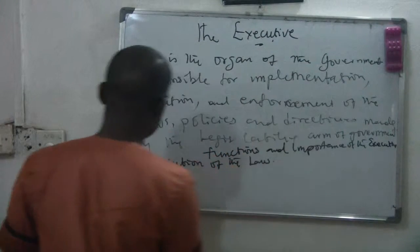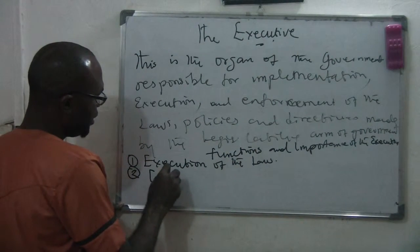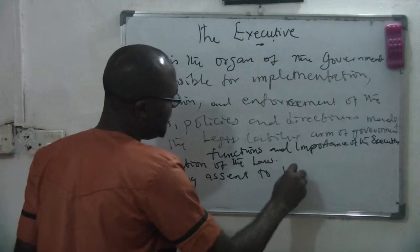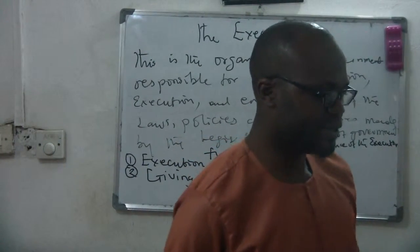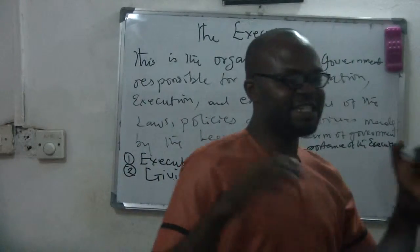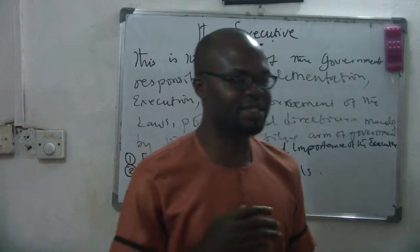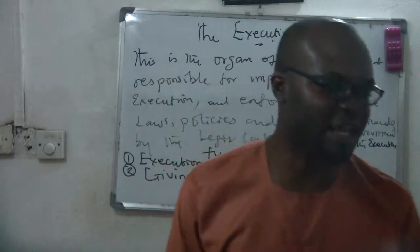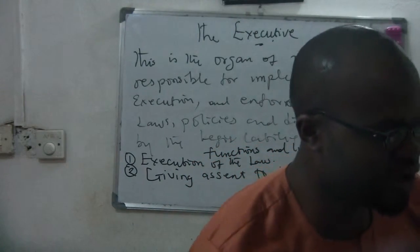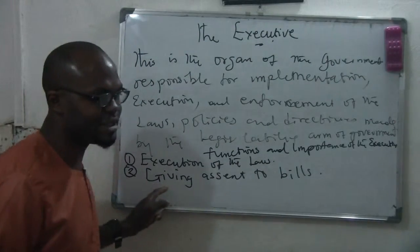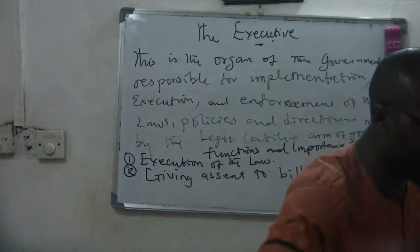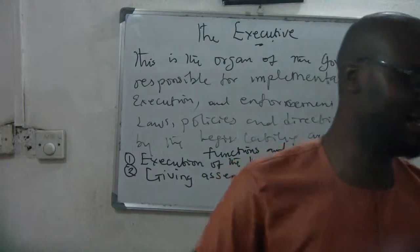Number two function is giving assent to bills. When the legislature in their chambers — like the National Assembly, the Senate or the House of Representatives — passes a bill, that bill has not become a law until the president signs it. Until the president gives assent to the bill by signing it into law. So that is another function of the executive.